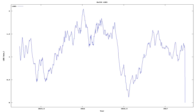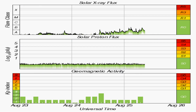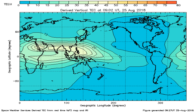And now we see changes in the speed of the rotation of the Earth, along with solar X-ray flux, solar proton flux, geomagnetic disturbances, and another graph of total electron content across the Earth.